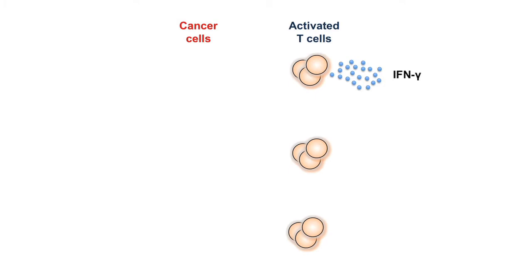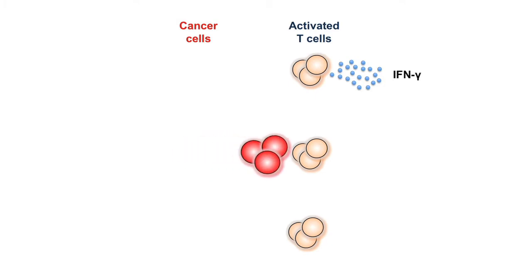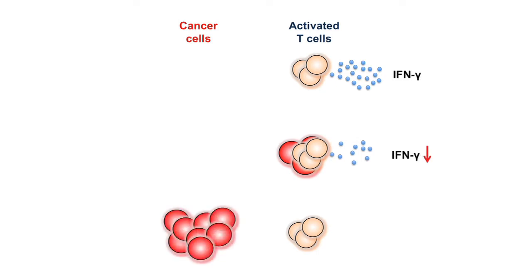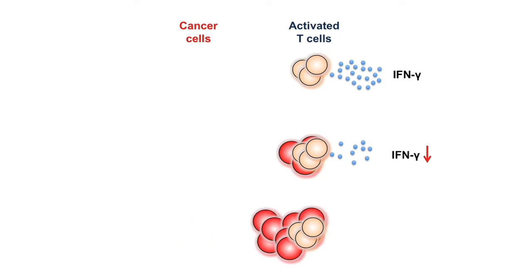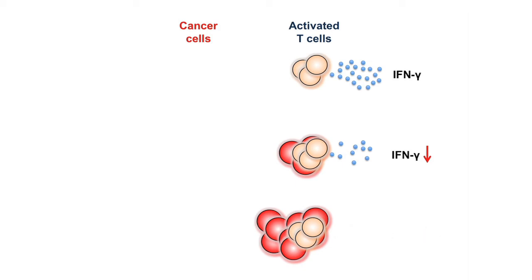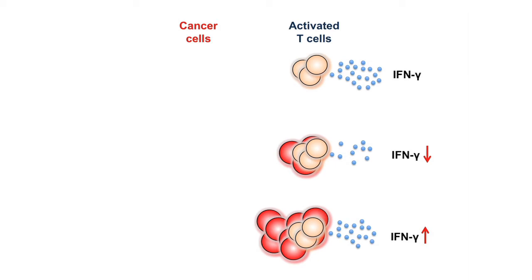We co-cultured activated T-cells with tumor cells. When we did this, we found that the T-cells' ability to produce interferon gamma decreased, while PD-1 expression increased when cultured with tumor cells, as opposed to the same number of T-cells by themselves. We also found that this decrease in interferon gamma was mediated, at least in part, by the depletion of glucose by the cancer cells — because the addition of glucose back to the co-culture allowed the T-cells to produce higher levels of interferon gamma once again.